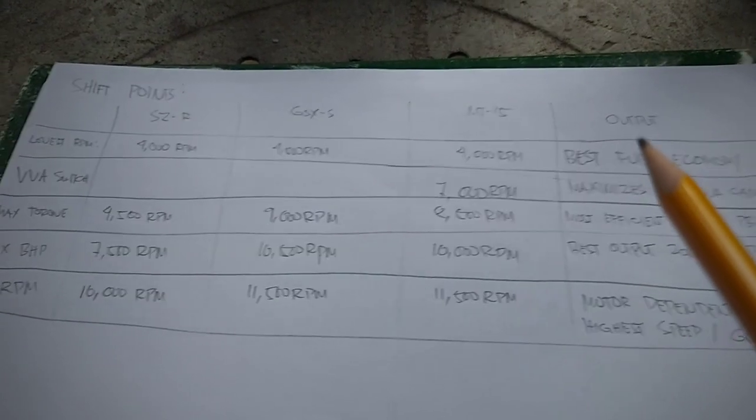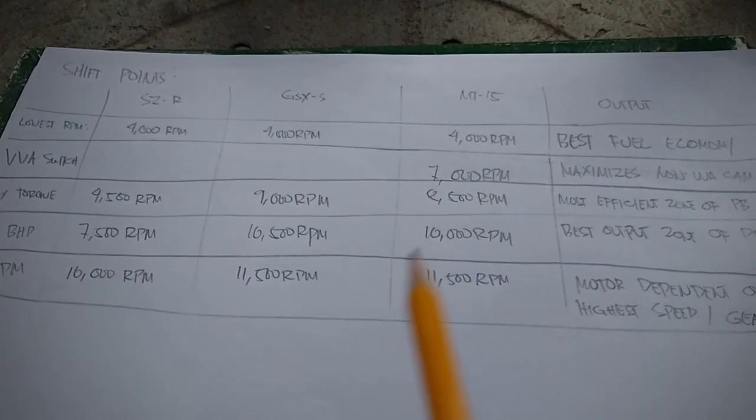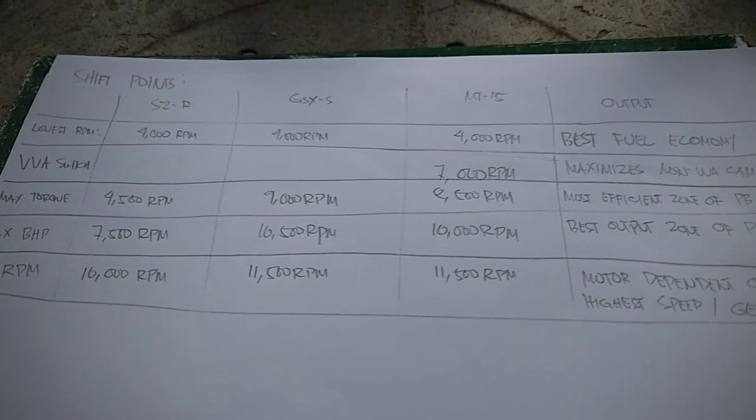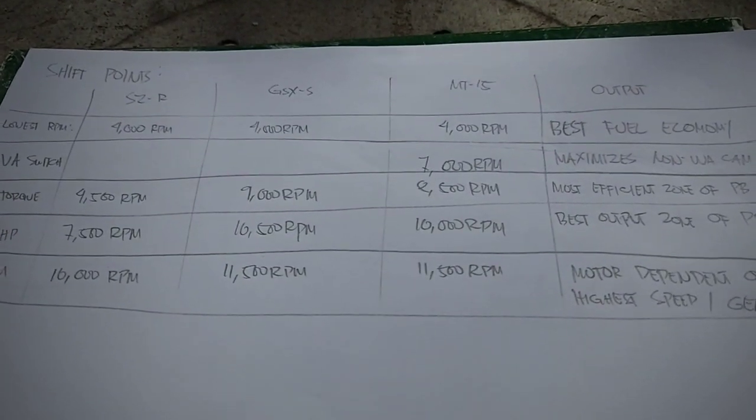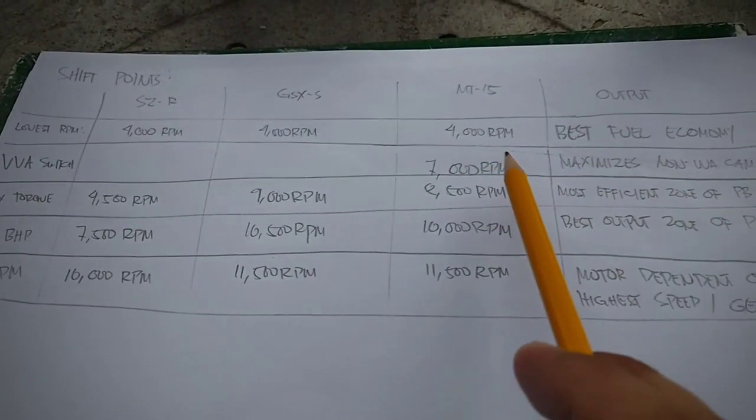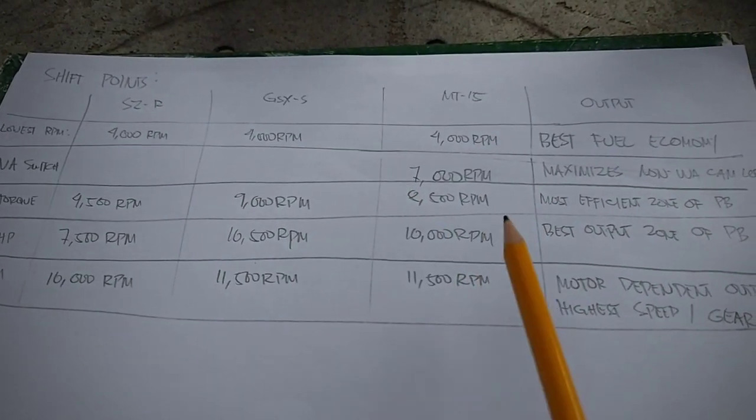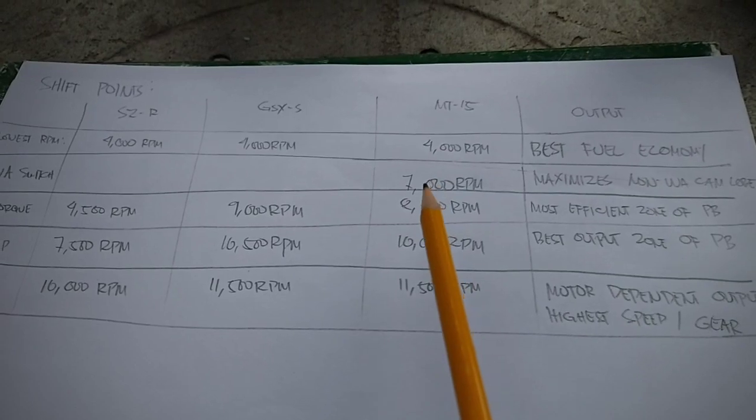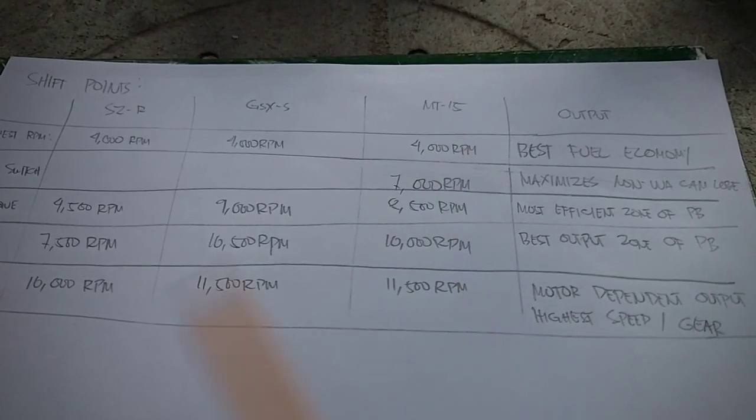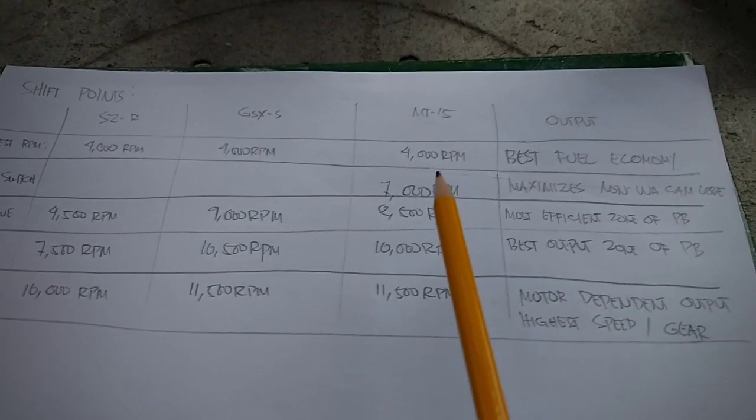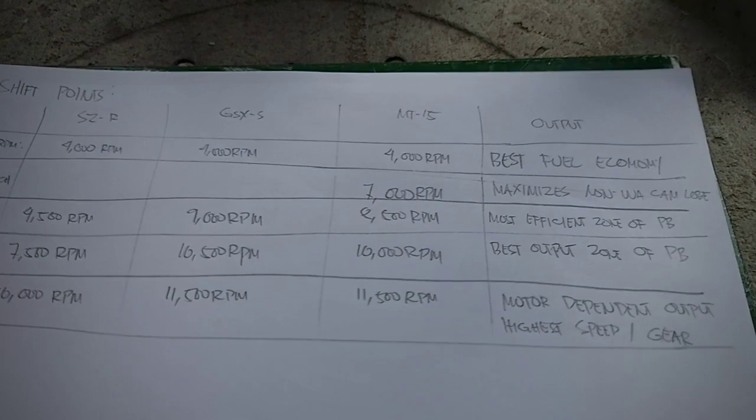So sa second point naman, kung kailan tayo pwede mag-shift optimally, of course, just before the VVA switch. So para sa MT-15 and R-15, it is around 7,000 RPM. You get beyond that, 7,400 RPM mag-activate si VVA. So bakit 7,000 RPM? Kasi yan yung pinaka-optimized part ng power curve ng small cam lobe natin kung gusto mong i-balance yung pagtitipid at yung hatak ng motor mo.